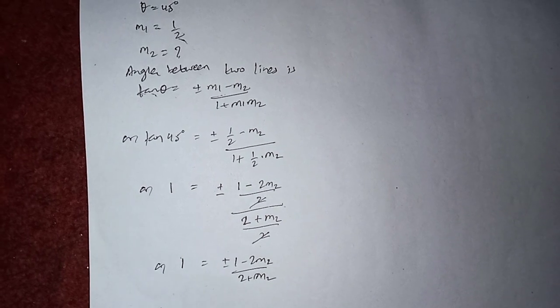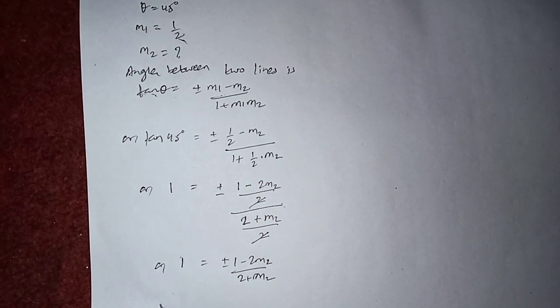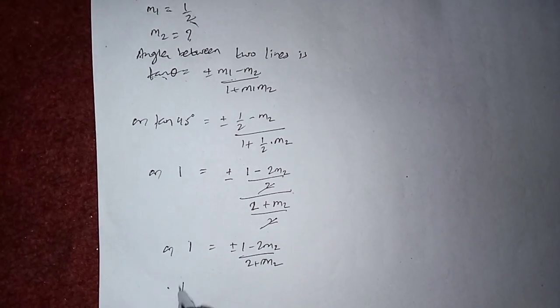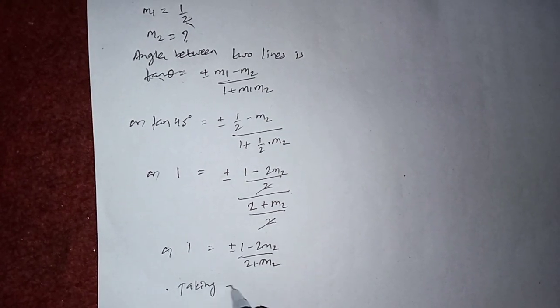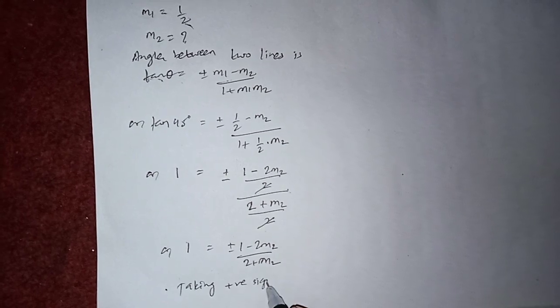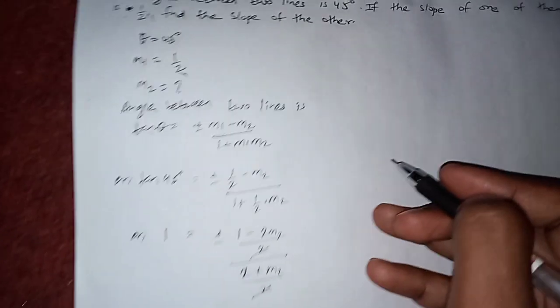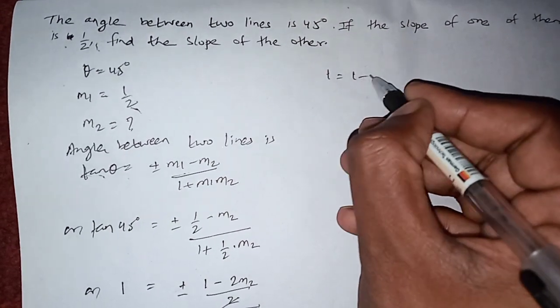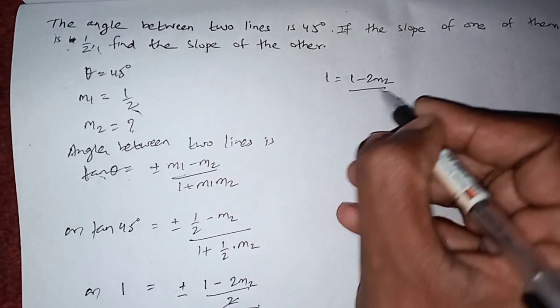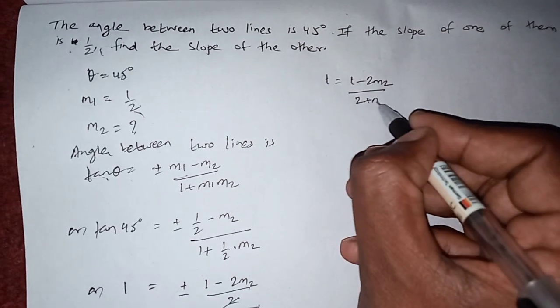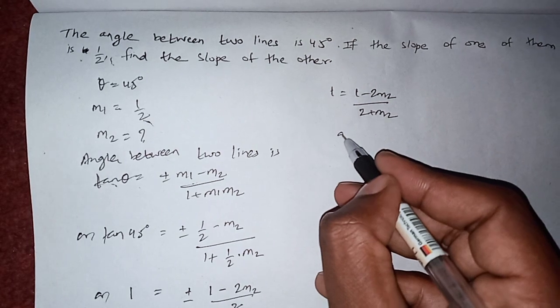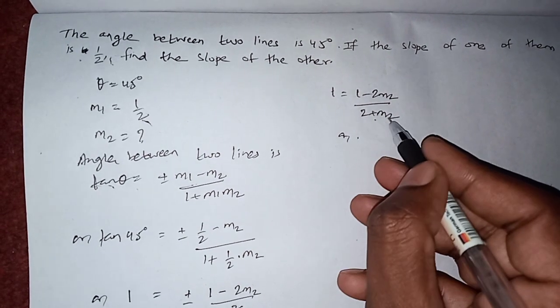So now (1 minus 2m2) by (2 plus m2). If we cross multiply, it will be 2 plus m2 equals to 1 minus 2m2.